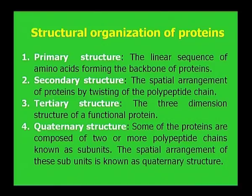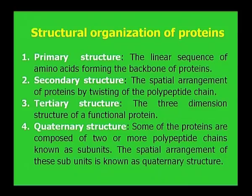Secondary structure determines the spatial arrangement of protein by twisting of the polypeptide chain. Tertiary structure is the three-dimensional structure of a functional protein. Quaternary structure refers to proteins composed of two or more polypeptide chains known as subunits; the spatial arrangement of these subunits is known as the quaternary structure.